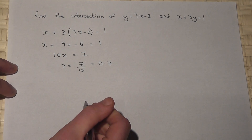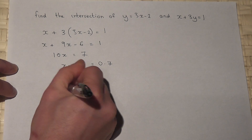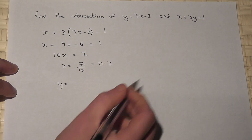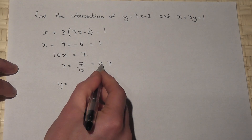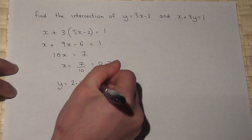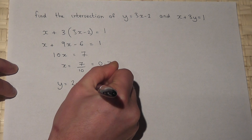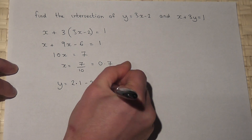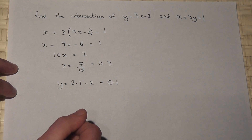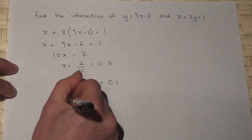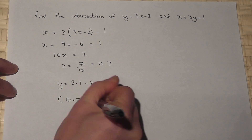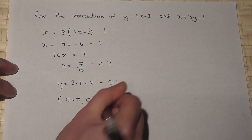Then, to find the y-coordinate, I do y equals 3 times x, which is 3 times 0.7, which is 2.1, take away 2, which is 0.1. So the point of intersection is (0.7, 0.1).